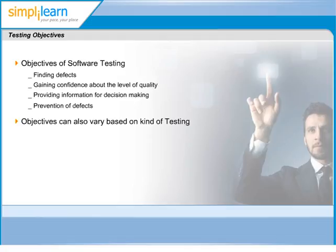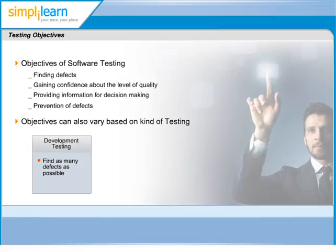Let us look at different types of testing and their respective objectives. The objective of development testing, also known as unit testing or component testing, will be to find as many defects as early as possible. Fixing these defects at this stage will save on defect leakage cost and time.